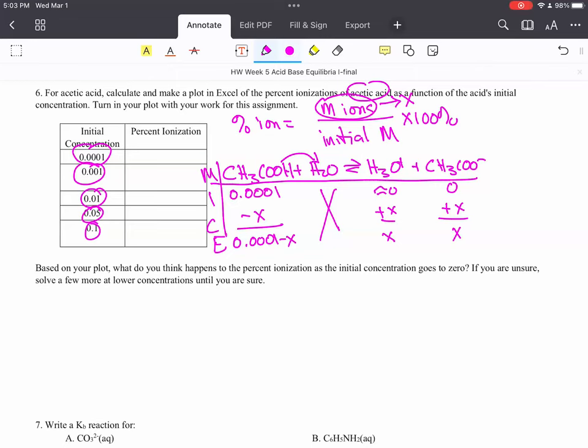And you're going to look up the KB value. And then whenever you solve for your X, your X is your amount of reaction or extent of reaction. And in this case, it's the molarity of the ions in solution.